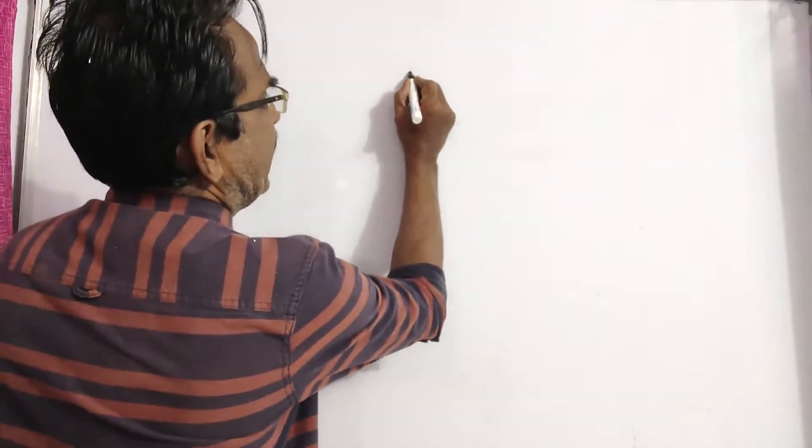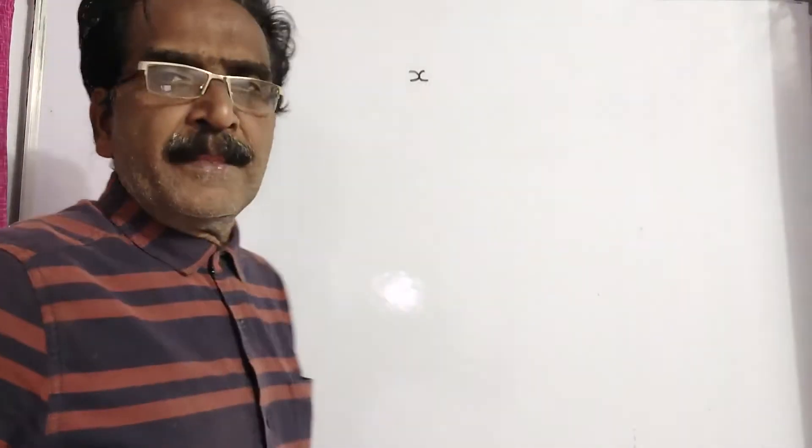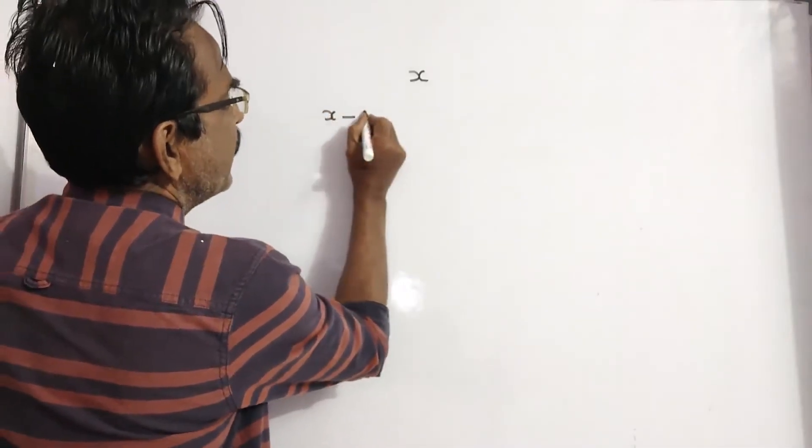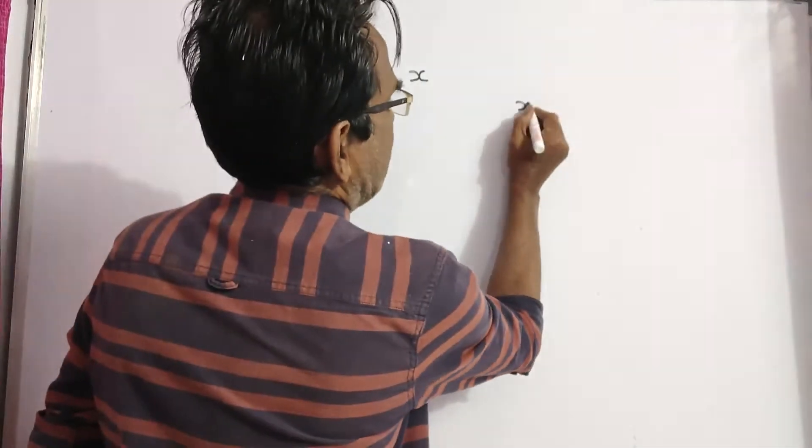This is a simple problem, friends. Say the age of the man is x. Then his age 20 years ago was x minus 20, and his age after 10 years will be x plus 10.